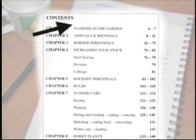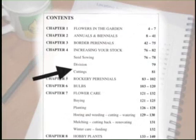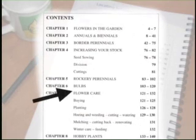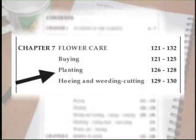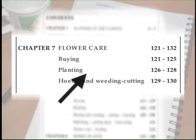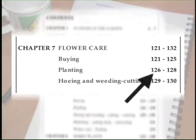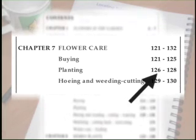You'd start by looking down through all the main headings until you find something that's of interest. Once you've found that, continue scanning down through the subheadings until you find the keyword. To find out what page it's on, scan along to the right hand side and you'll see that information about planting is on pages 126 to 128.